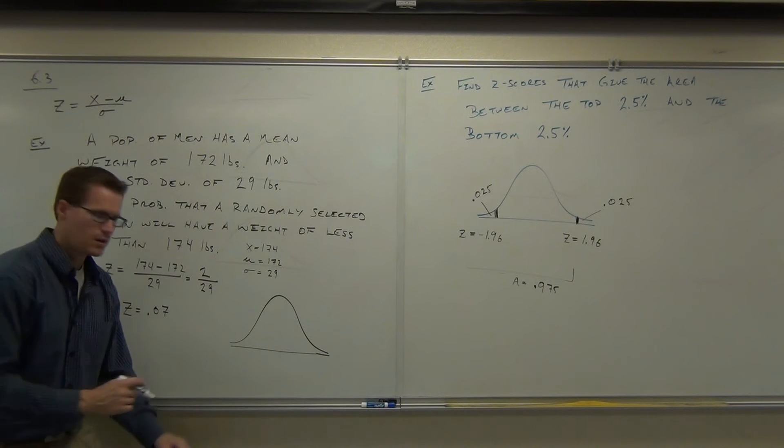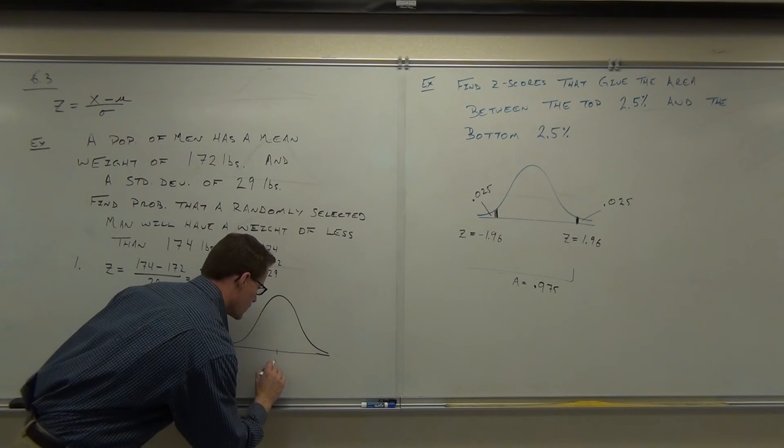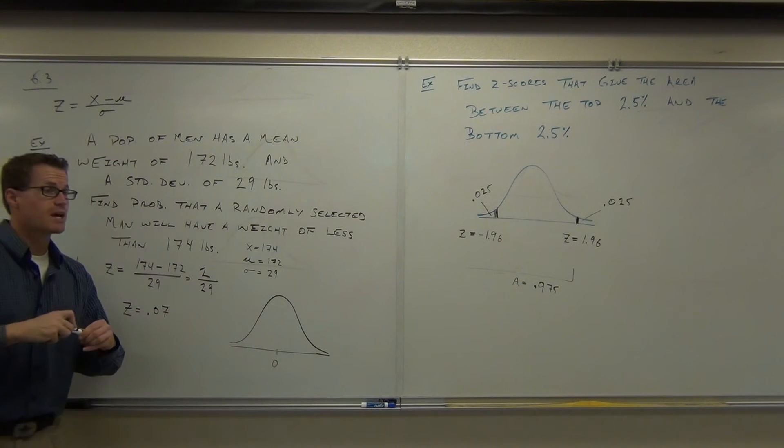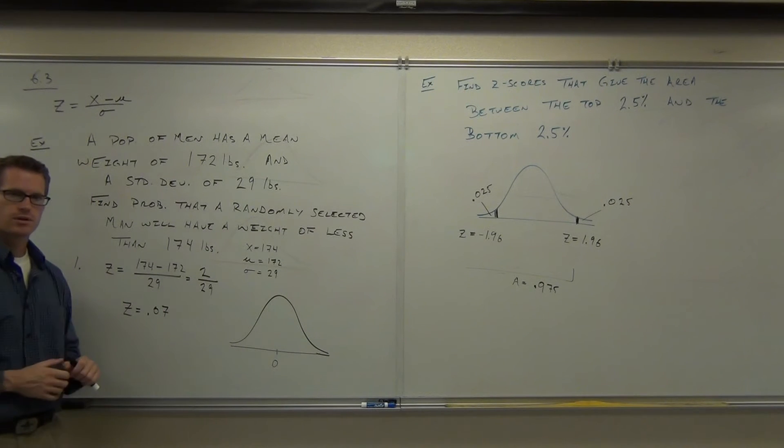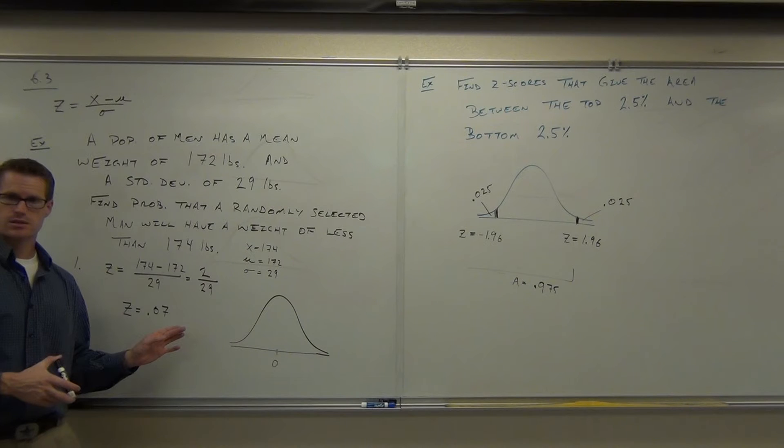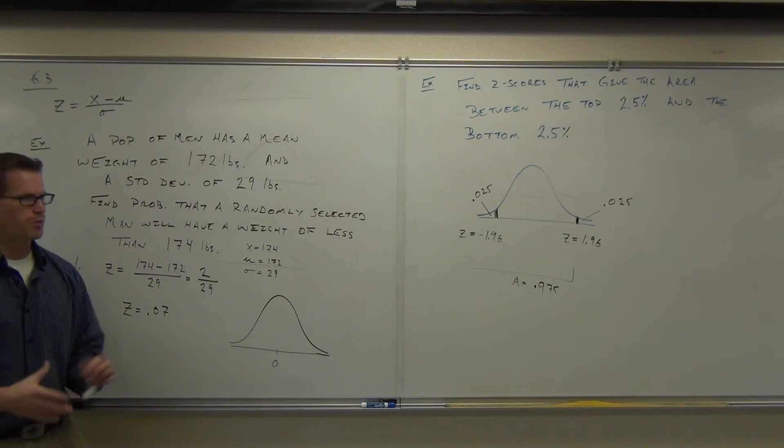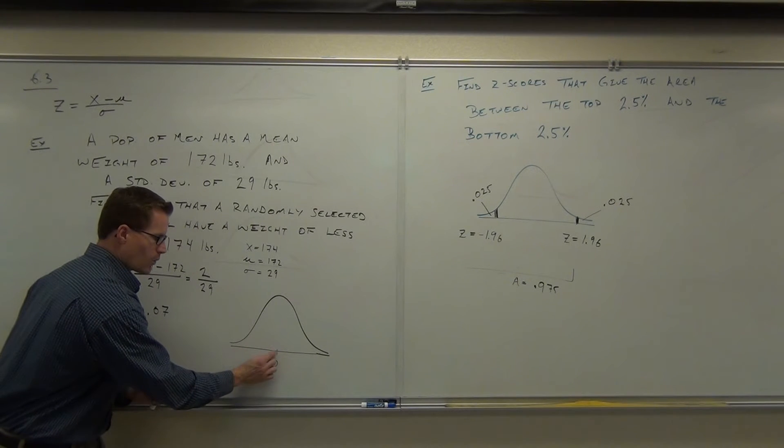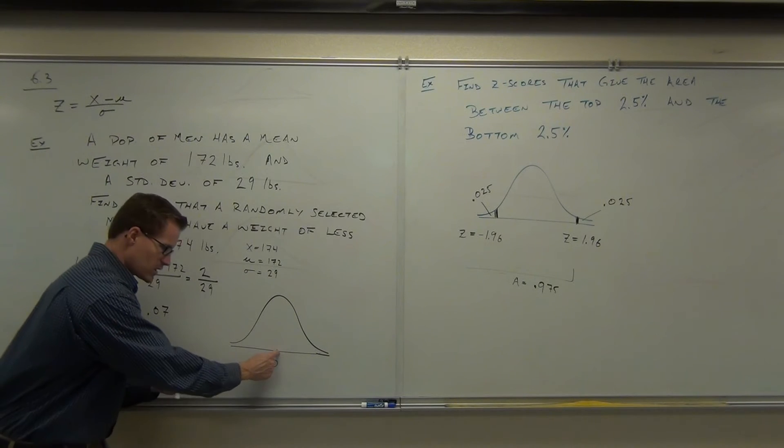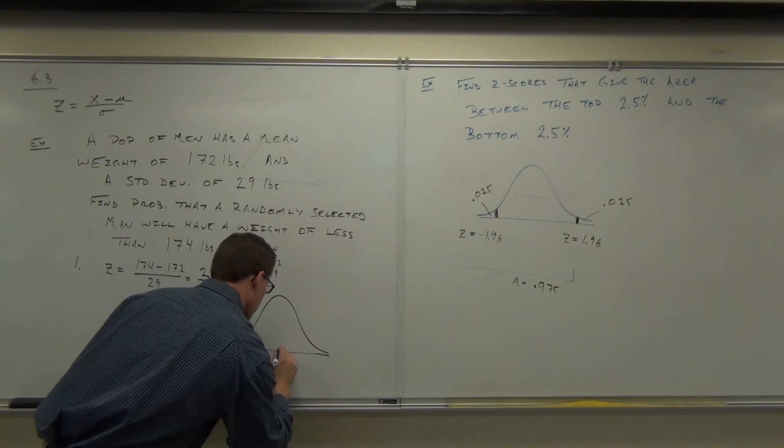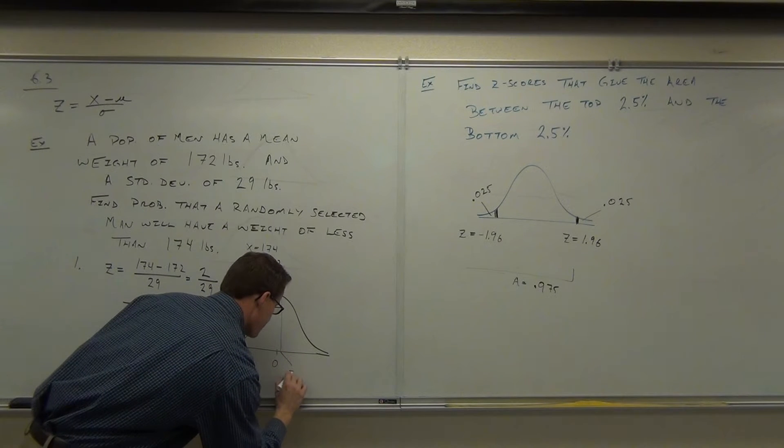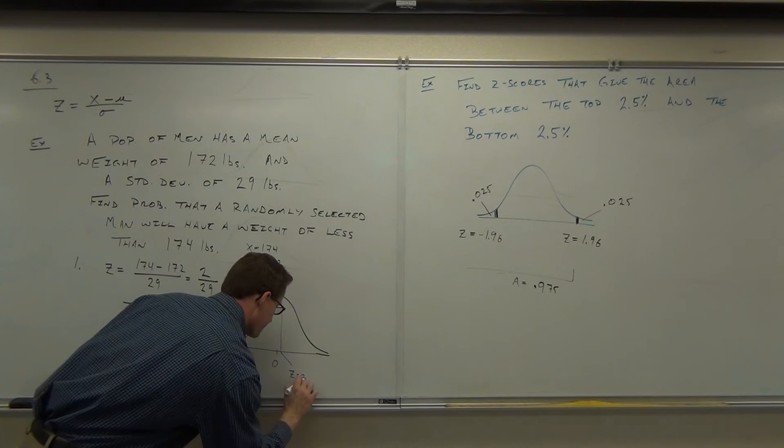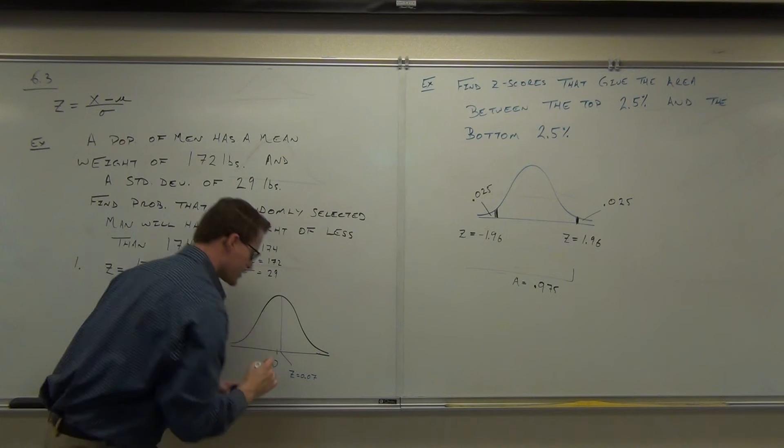Where's the mean here? In the middle. How much is the mean always? Zero. Where is 0.07 in accordance to the mean? Is it to the right or the left? It's positive, correct? So it's just a little, but not much. 0.07, that's like right there. It's really close.